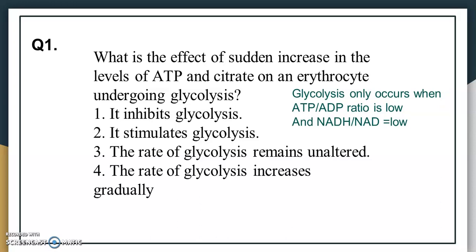When the AMP to ATP ratio is low, glycolysis, the Krebs cycle, and the electron transport chain occur. If the NADH to NAD ratio is low, then only glycolysis takes place. ATP and citrate act as inhibitors of glycolysis. So the answer will be option one for this question.